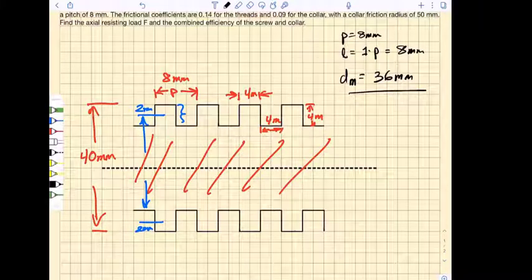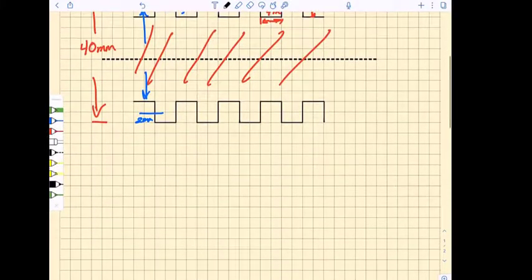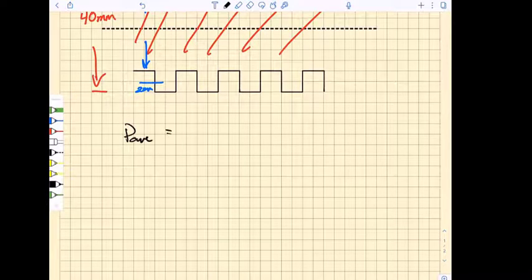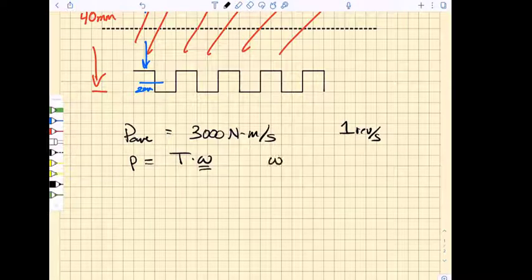The other thing we have to do is relate power to torque. We have an input power of 3 kilowatts, so our power is 3000 newton-meters per second. I've said before that power equals torque times omega. The speed is 1 revolution per second, and omega is in units of radians per second.